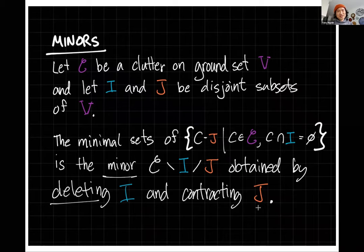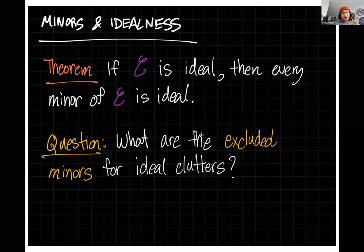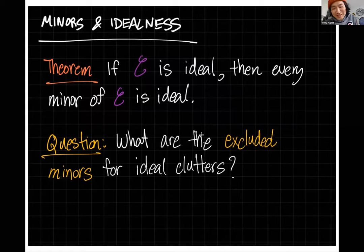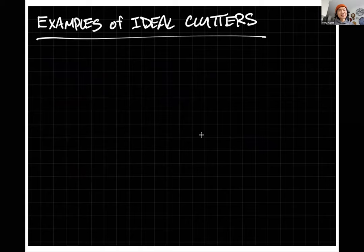Idealness behaves well with respect to minors: if a clutter is ideal, then every minor of it is also ideal. This raises the question: what are the excluded minors for ideal clutters — the minimal clutters under this minor relation that are not ideal? It turns out there are infinitely many, but this is not the main topic of this talk.